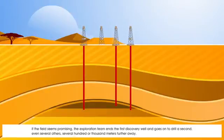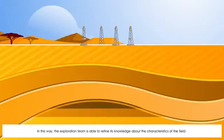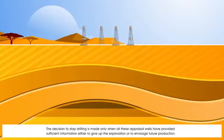If the field seems promising, the exploration team ends the first discovery well and goes on to drill a second, even several others, several hundred or thousand meters further away. In this way, the exploration team is able to refine its knowledge about the characteristics of the field. The decision to stop drilling is made only when all these appraisal wells have provided sufficient information either to give up the exploration or to envisage future production.